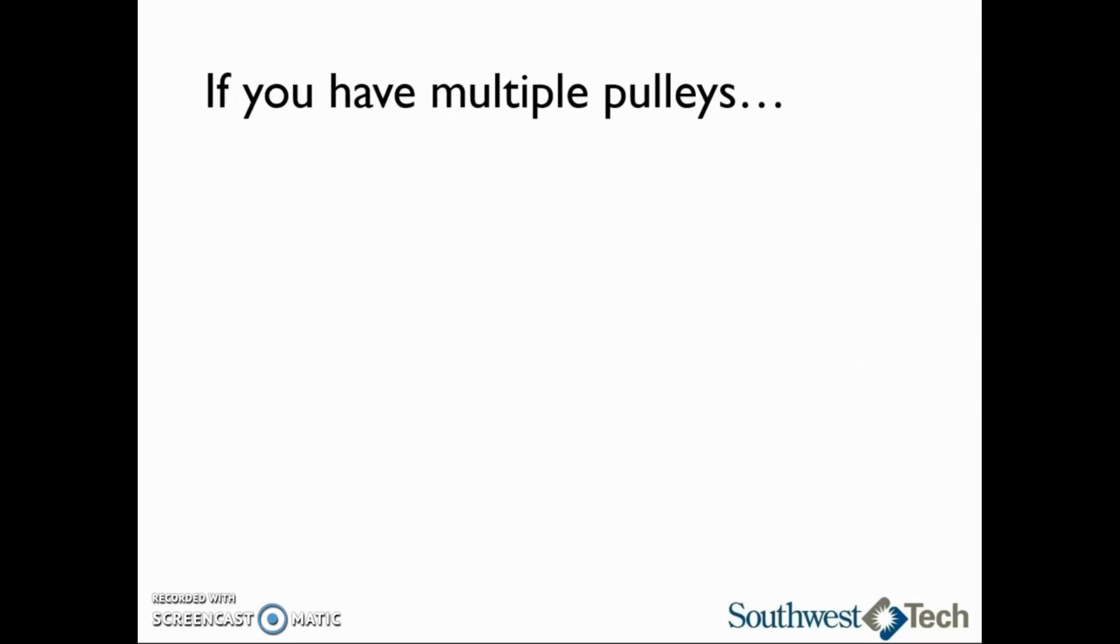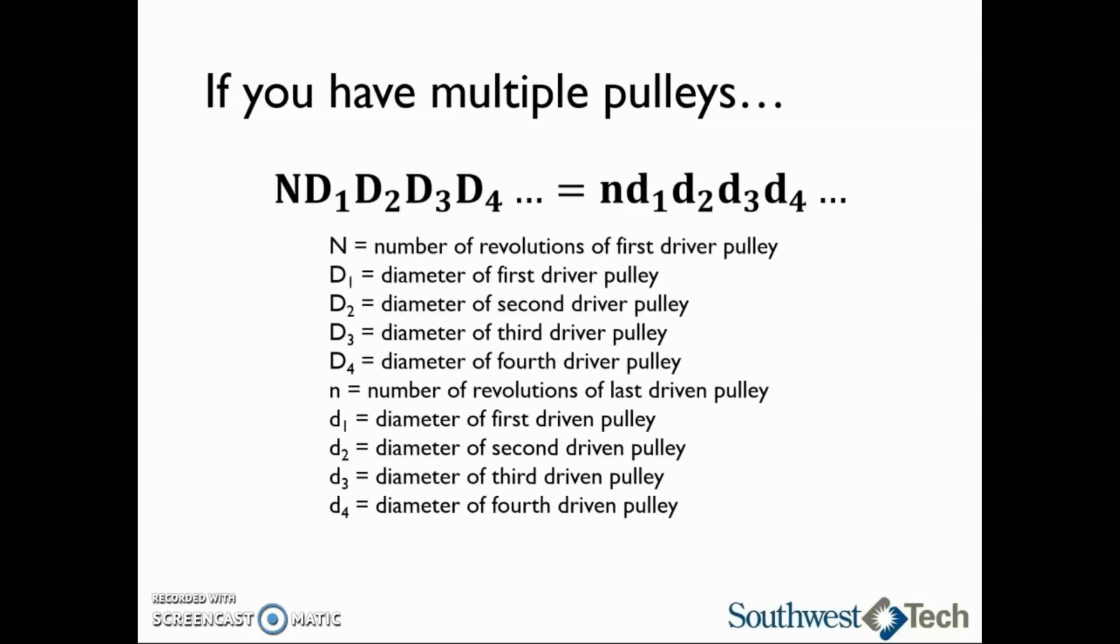If we have multiple pulleys, we will multiply capital N times D1 times D2 times D3 times D4, etc., and that equals lowercase n times d1 times d3 times d4, etc., where all of the capital letters represent the driver pulleys and all of the lowercase letters represent the driven pulleys.